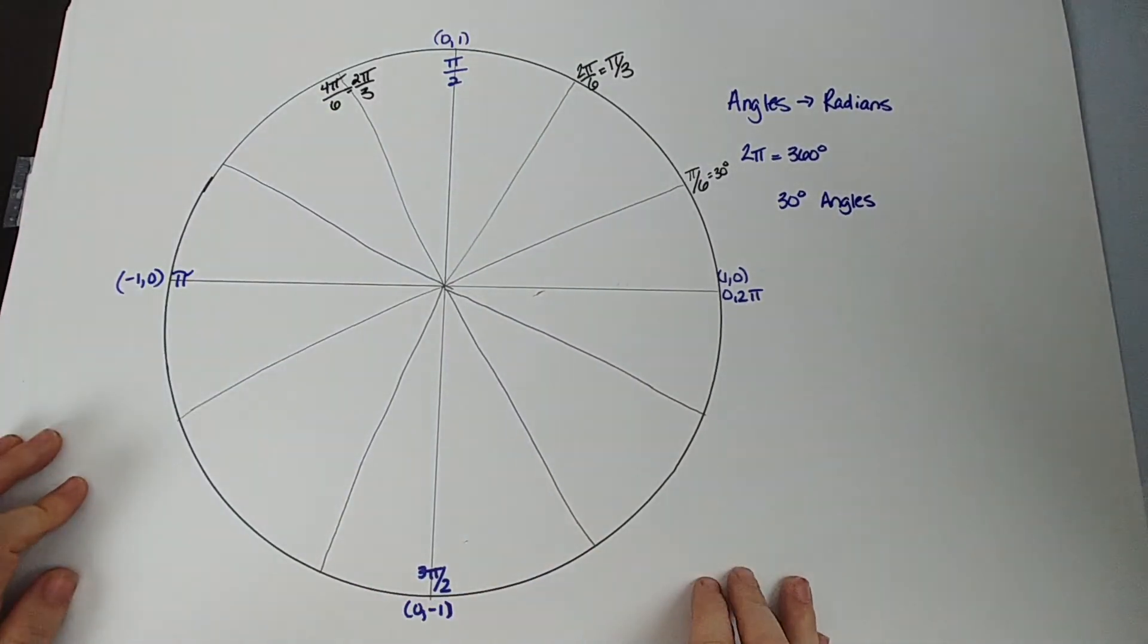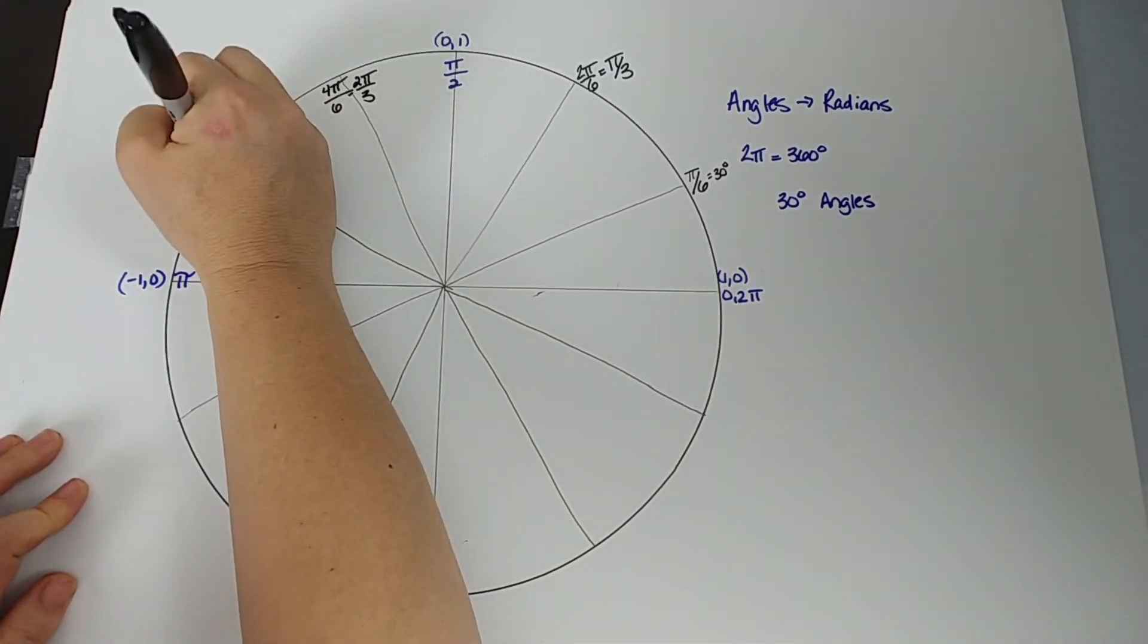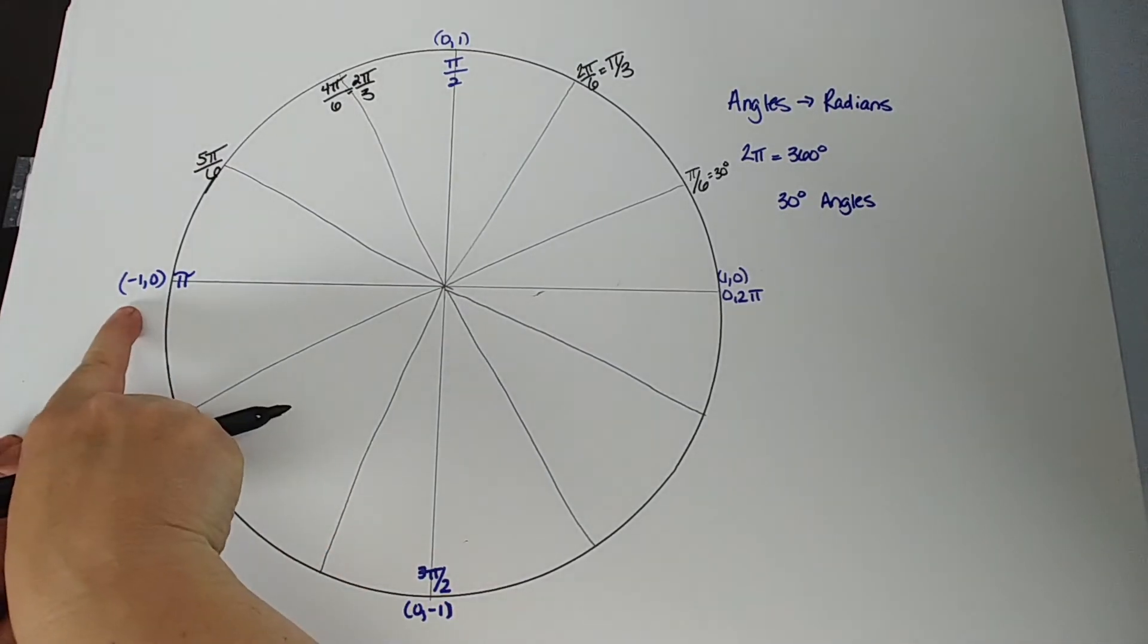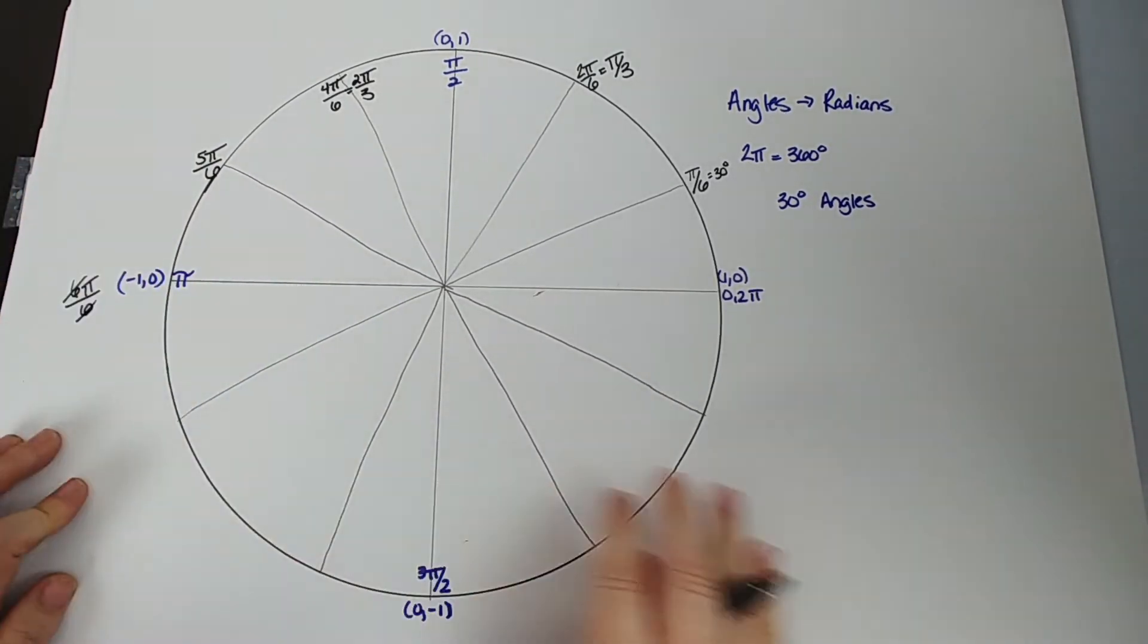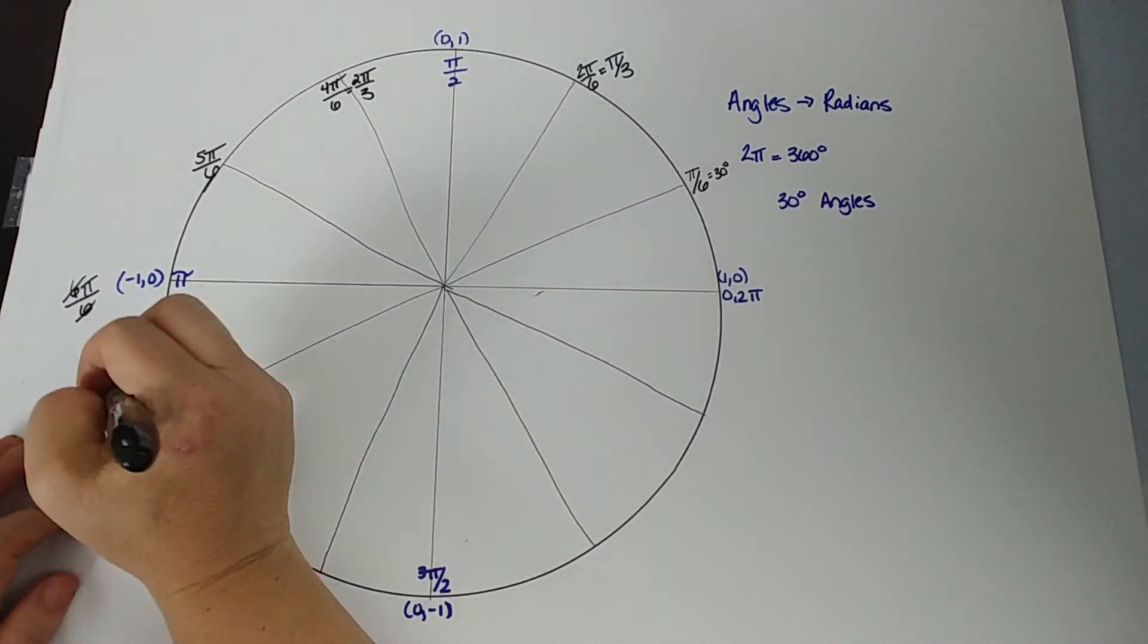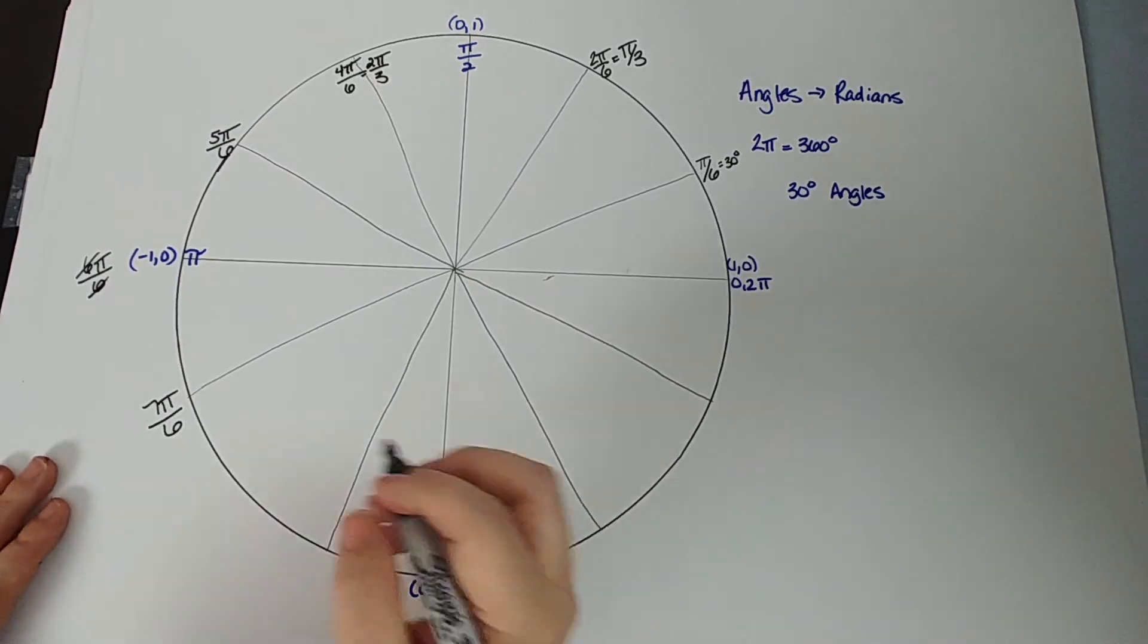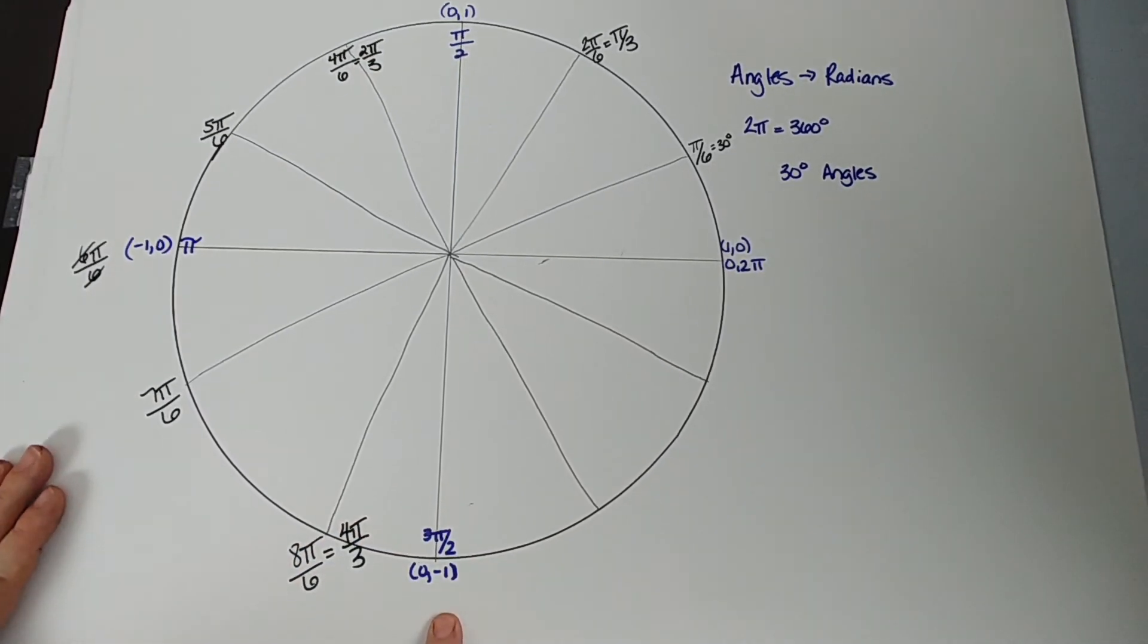So you can simplify these really easily, right? 1, 2, 3, 4, 5π/6. Don't have to simplify. 6π/6. Well, what's 6π/6? 6π/6 is simply π. 7π/6. Leave that alone. 8π/6 equals what? 4π/3. 9π/6 is still 3π/2.